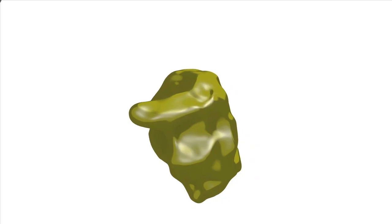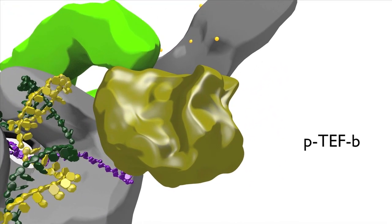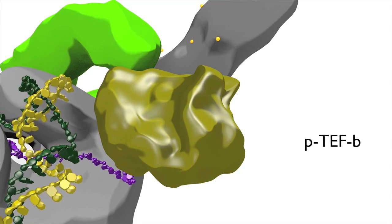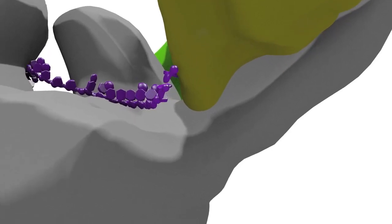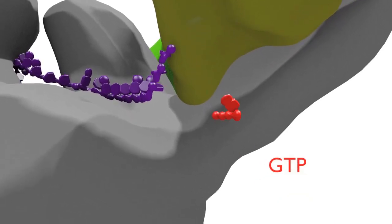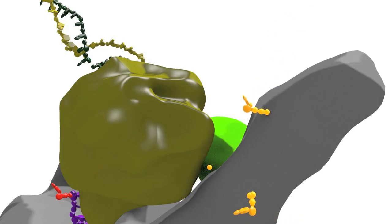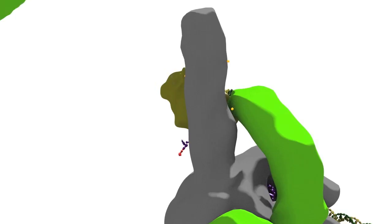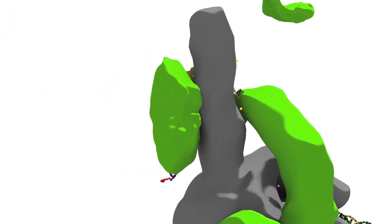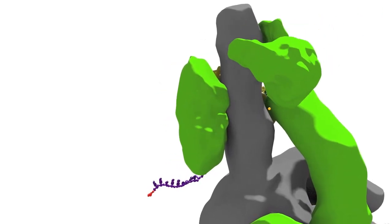During the RNA processing step, a complex of RNA processing enzymes called PTEFB binds to the phosphorylated CTD. As the 5' end of the growing RNA comes out of the exit channel of RNA polymerase, PTEFB attaches a guanosine cap to the 5' end of the RNA. PTEFB then attaches additional phosphate groups to the CTD, which causes paused transcription elongation to resume. The more highly phosphorylated CTD also recruits additional RNA processing enzymes needed to complete processing of the transcript at the end of the transcription cycle.